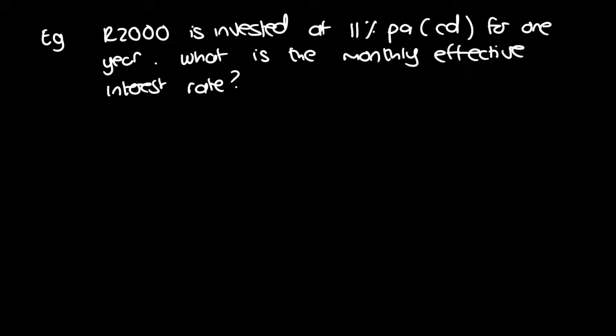The example we have here: 2000 rand is invested at 11% per annum compounded daily, just for one year — but the time doesn't really matter to us. The question asks: what is the monthly effective interest rate? So we have 11% per annum compounded daily, and we want to convert it to monthly.